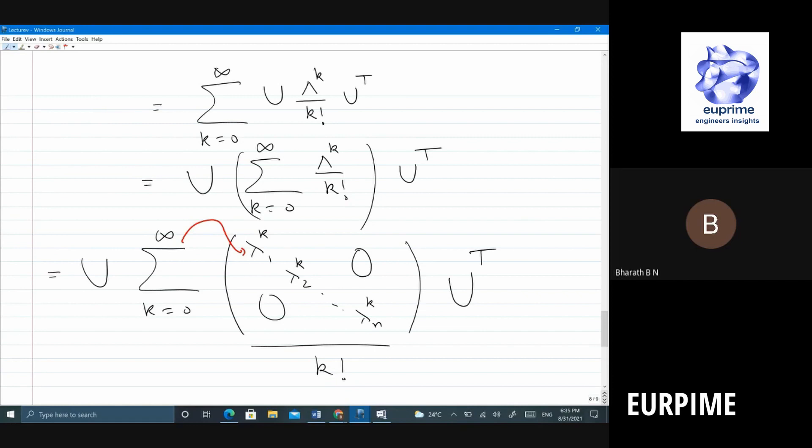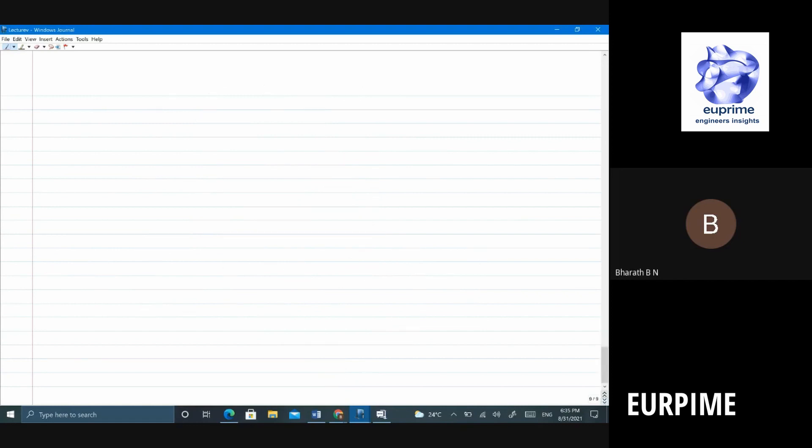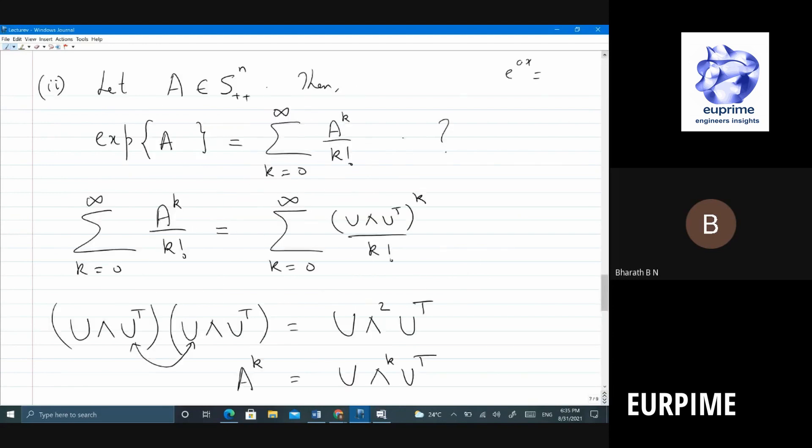So essentially what I can actually do is, you know, we started with this. Right? So e power a. Right? So essentially the meaning is it's U. You have a diagonal matrix with e power lambda 1, e power lambda 2 and so on, e power lambda U transpose. Okay? That is what the meaning is.